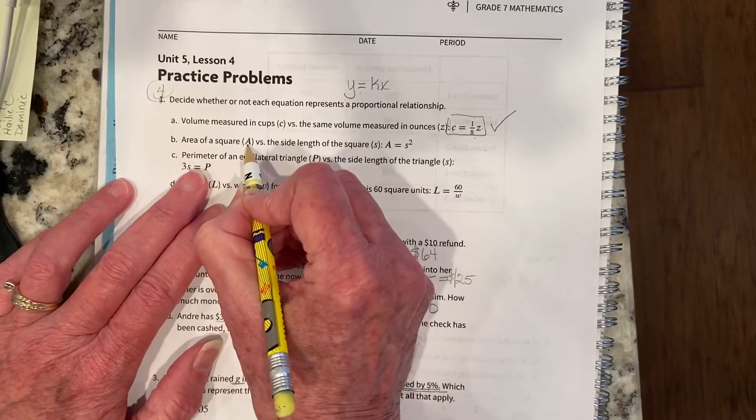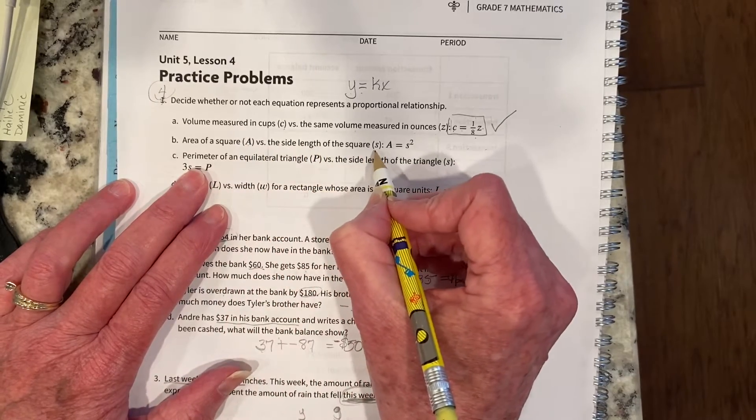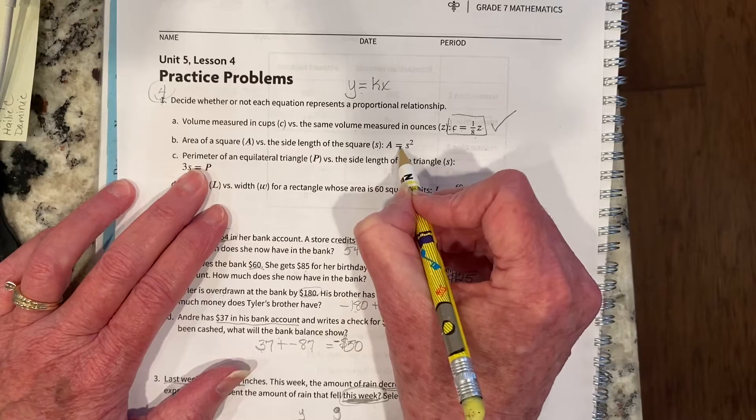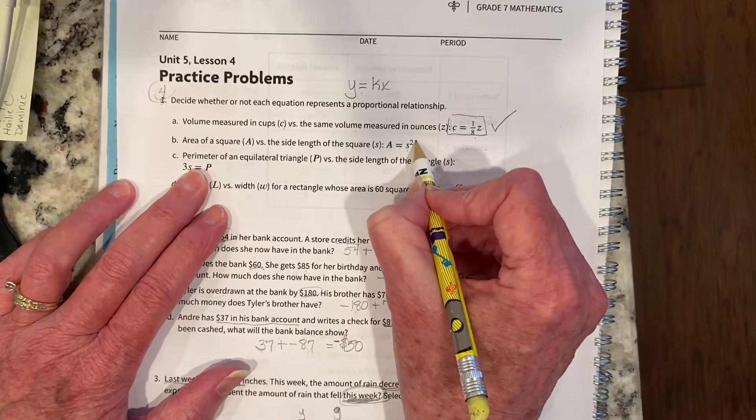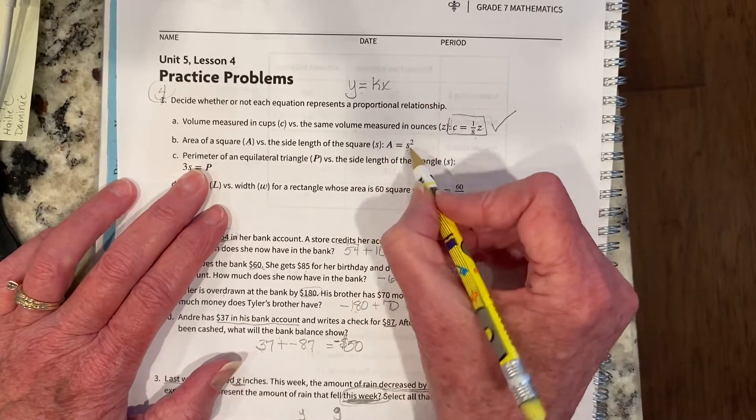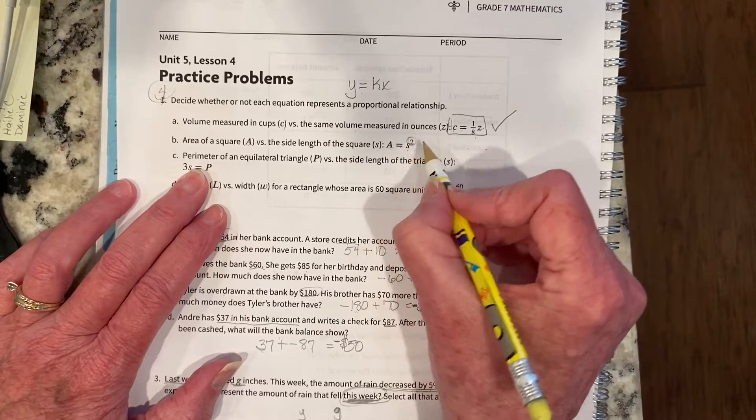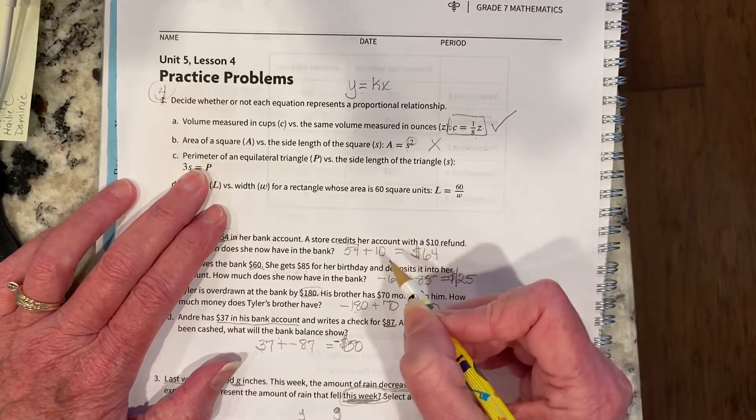Area of a square A versus the side lengths of the square S. A equals S squared. Well, that kind of looks like it, but we have this square right here, and that would make it not proportional.